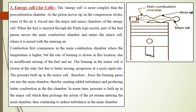Next we discuss the energy cell, also known as the air cell. The energy cell is more complex than the pre-combustion chamber in terms of the construction of the chambers, requiring very precise design. Looking at the figure: as the piston moves up in the compression stroke from BDC to TDC, some of the air is forced into the major and minor cells of the energy cell.